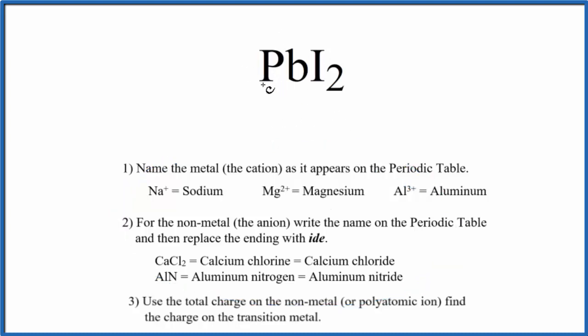First, we'll write the name for the metal, just as it appears on the periodic table. That's lead. Then we'll write the name for the non-metal, as it appears on the periodic table. So iodine, lowercase i, and we're going to cross out the ending and replace it with ide.